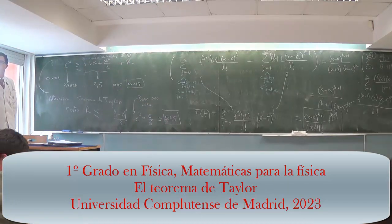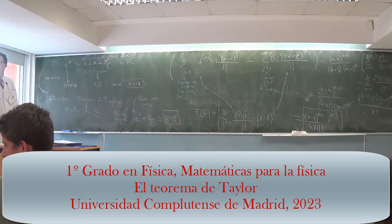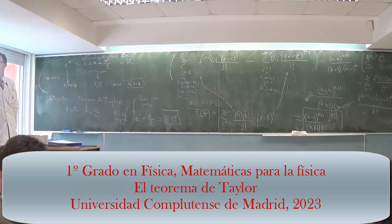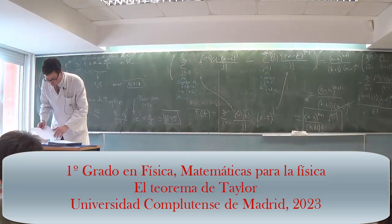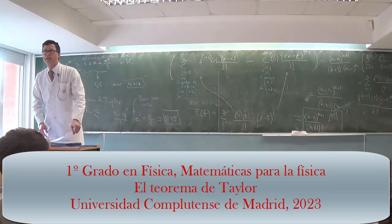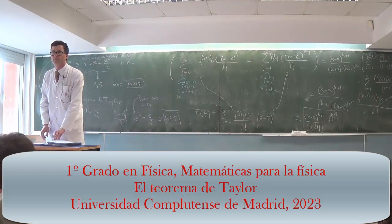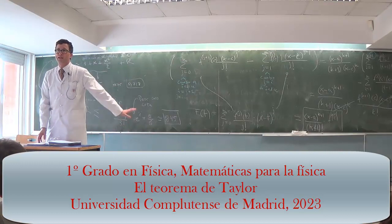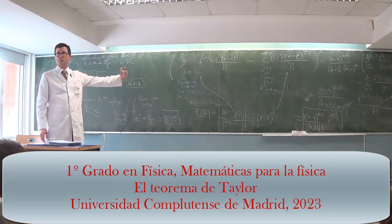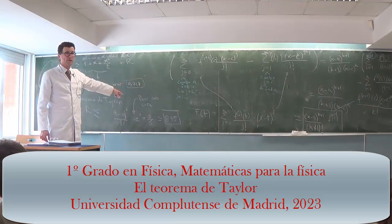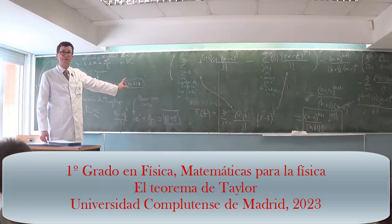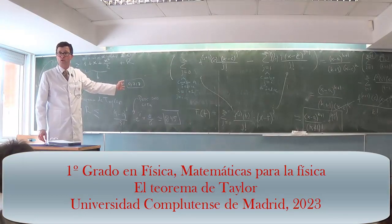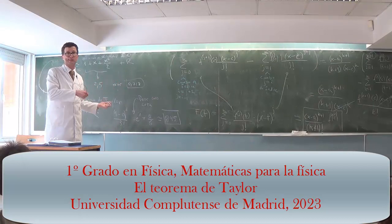On a closed interval where the function has continuous derivative, the maximum is always attained — that's where you evaluate the bound. We have finished with Taylor polynomials. There is another problem sheet on the virtual campus — don't forget. This topic technically comes after the midterm exam, so it won't be on it.